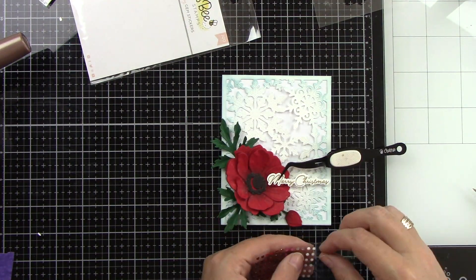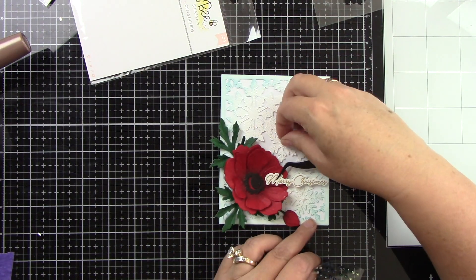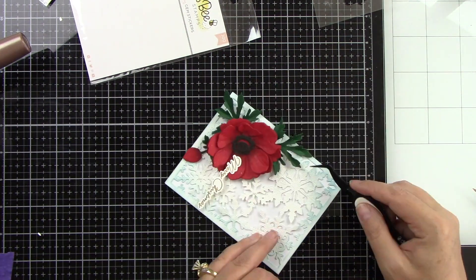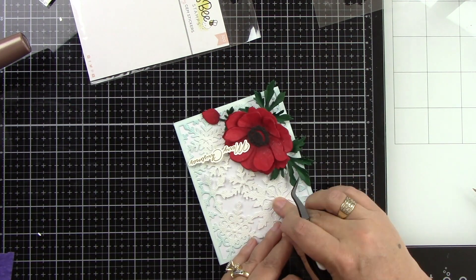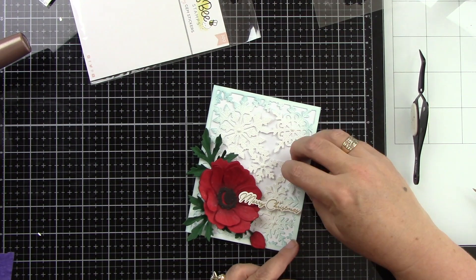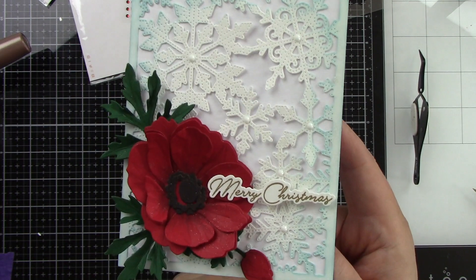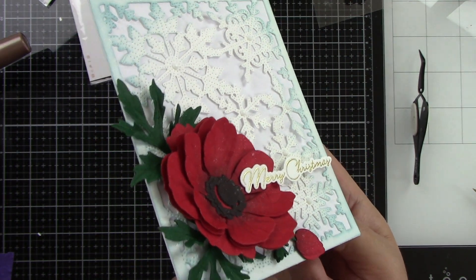While I add some of the Vintage Holiday Gem Stickers, I'm using the white ones and I'm going to put those in the centers of all of my snowflakes. The red would have also been really gorgeous too but I really wanted to keep the red to just the flower.